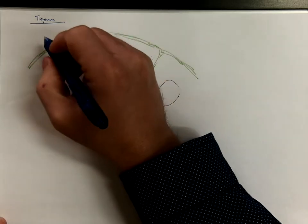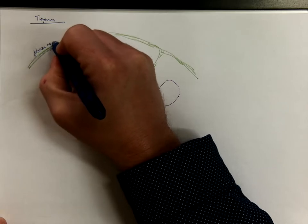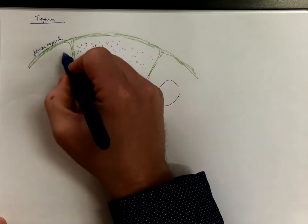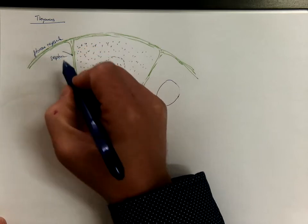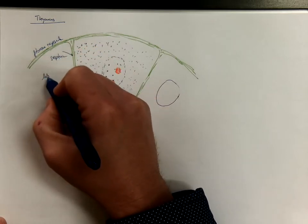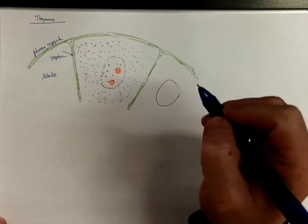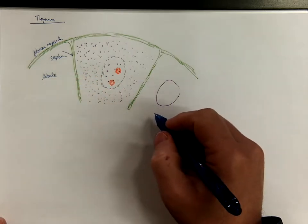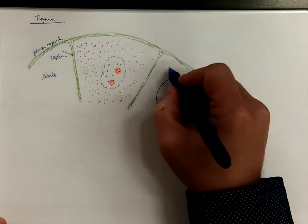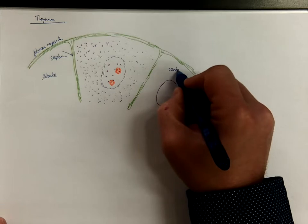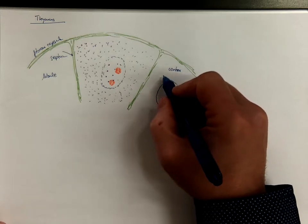We got the fibrous capsule on the surface, the connective tissue septa, and the thymic lobules. There is a cortex where the maturation of T lymphocytes occurs.